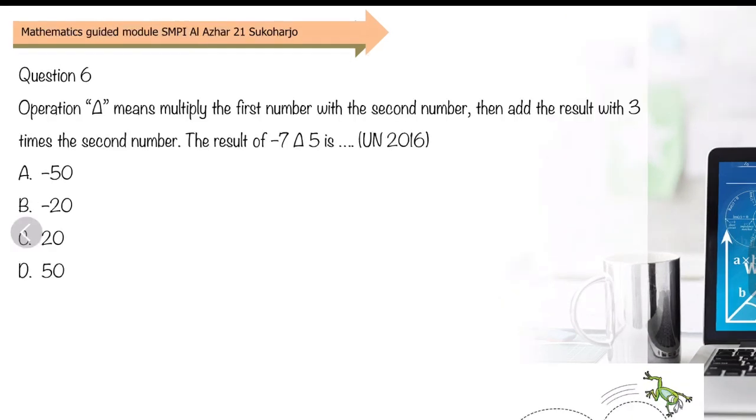Question 6: This has a special operation with a triangle symbol. It means multiply the first number with the second number, then add the result with 3 times the second number. The result of negative 7 triangle 5 means multiply the first number by the second: negative 7 times 5.